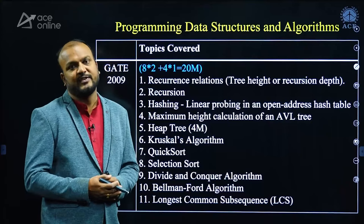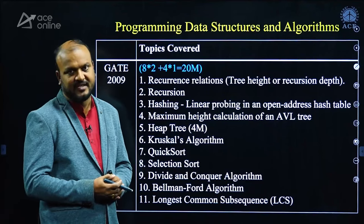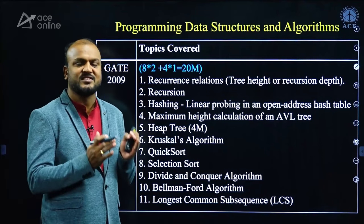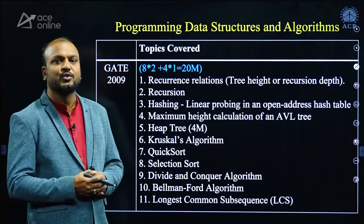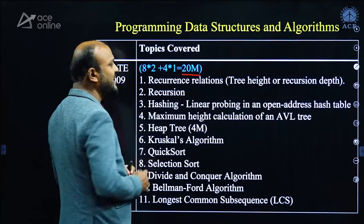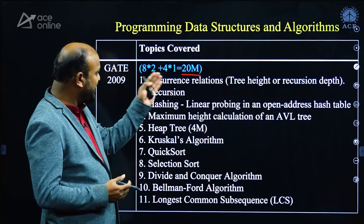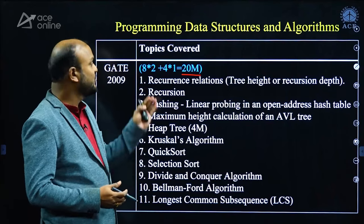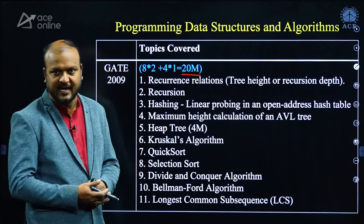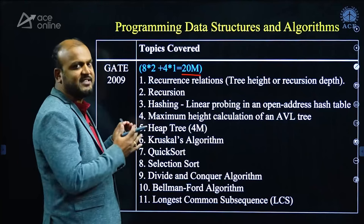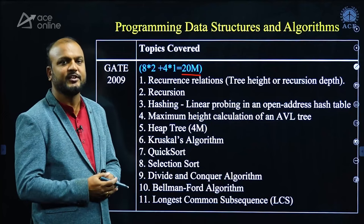First, I will start with Programming, Data Structures and Algorithms — commonly called PDA. PDA is one of the most weighted subjects in GATE Computer Science. In GATE 2009, a total of 20 marks were given from PDA, consisting of eight 2-mark questions and four 1-mark questions. I am going to share this PDF in the description — please download it for your reference.